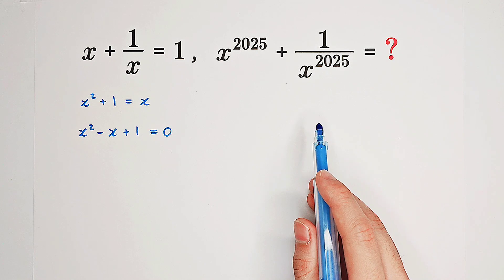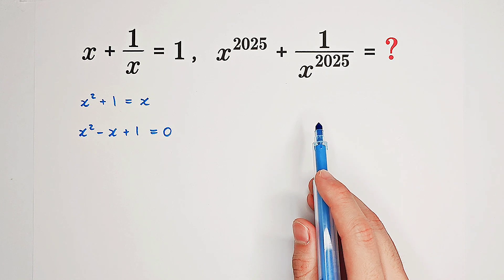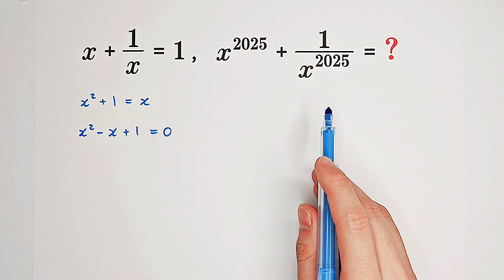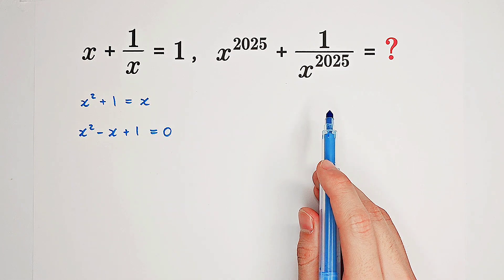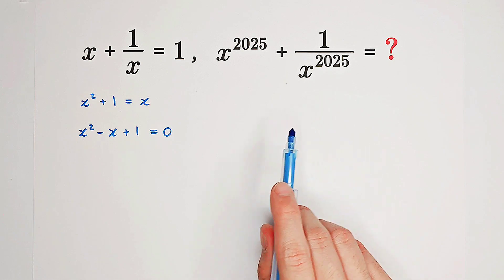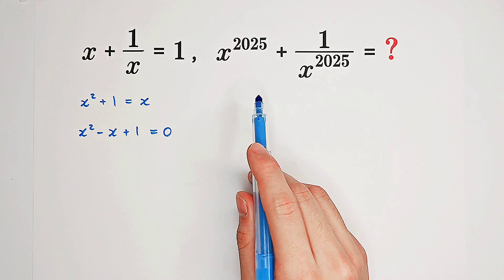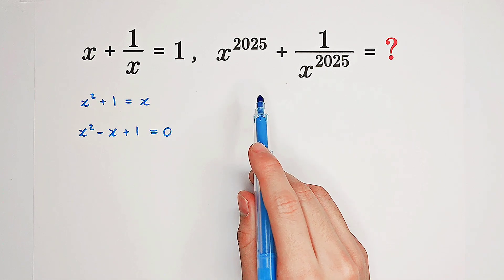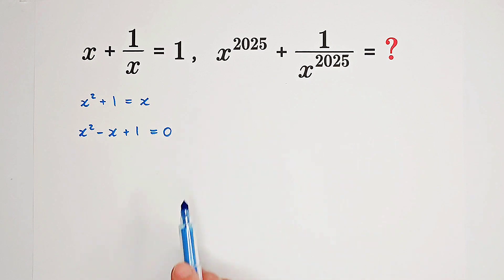Because for evaluating this term, we need to raise it to a very high exponent, and that is 2025. And for me, it is impossible. So, we better get a better way.